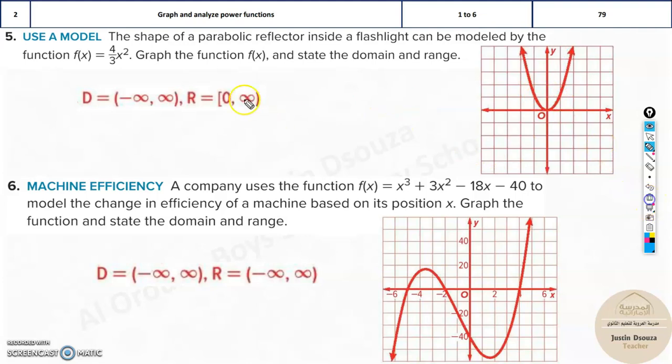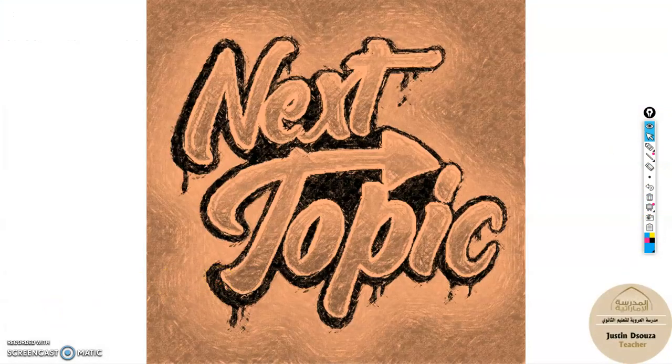Now in case we had, say, x squared minus 3. Then it's positive x squared, so over here it will start and it will go something like this. But if it would have been minus x squared minus 3, then it will be like this. So please remember that, and then based on that, you can write the domain and range.